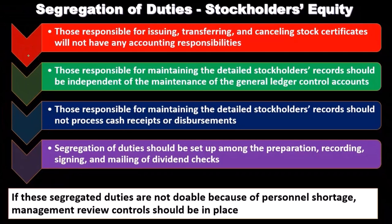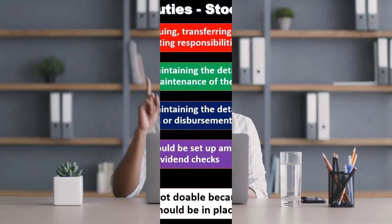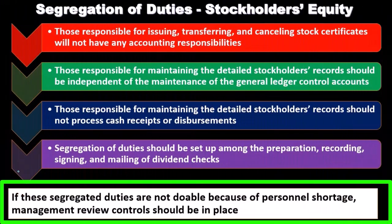These are fairly heavy segregation of duties requirements — particularly that those responsible for issuing, transferring, and canceling stock certificates will not have any accounting responsibility. Without such internal controls, the same person involved in the accounting process might also handle those transactions. If these segregations of duties are not feasible due to personnel shortages, management review controls should be put in place as a compensating control.